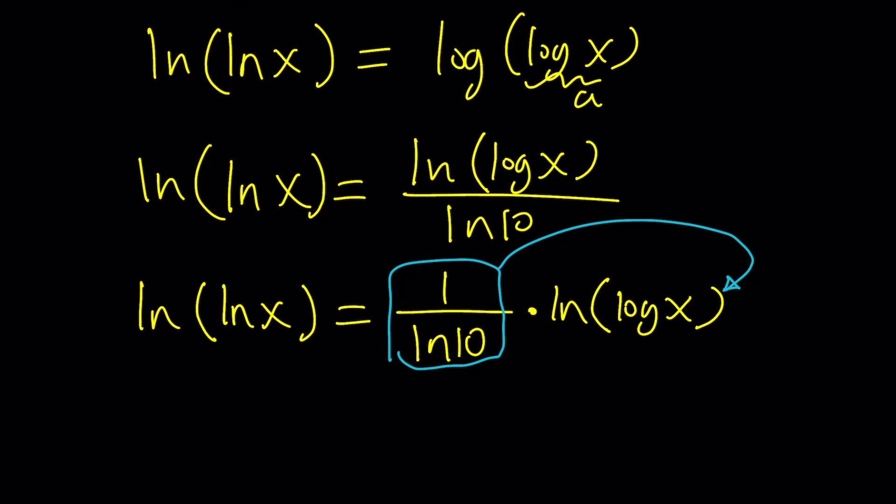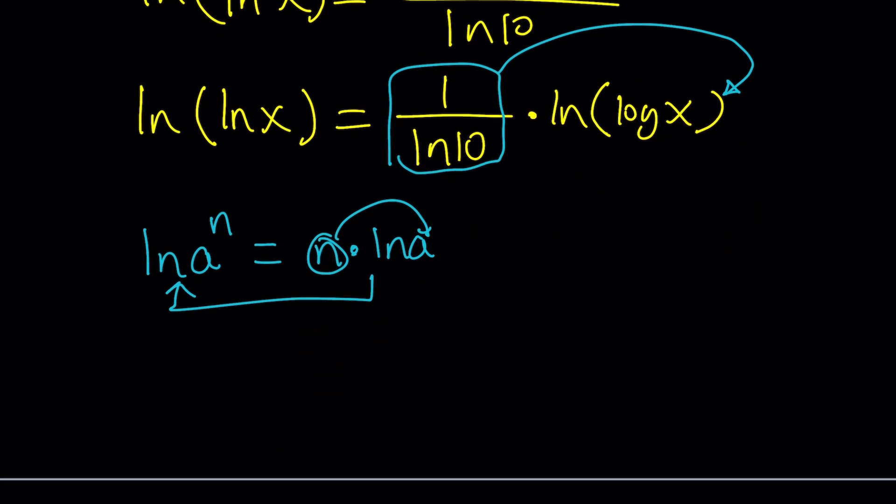Whenever you have a number like this you can go ahead and make that an exponent. And remember it's kind of like this. ln a to the power n can be written as n times ln a or n times ln a can be written as ln a to the power n. So now we're going to get the following from here. ln ln x equals ln log x to the power 1 over ln 10. So far so good.